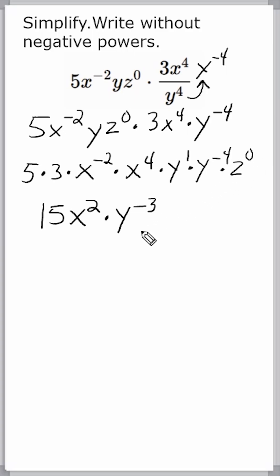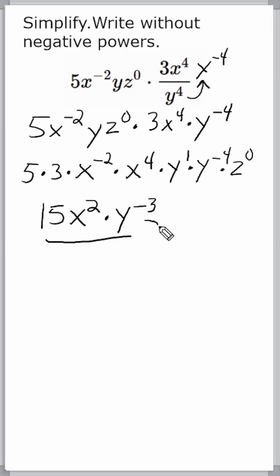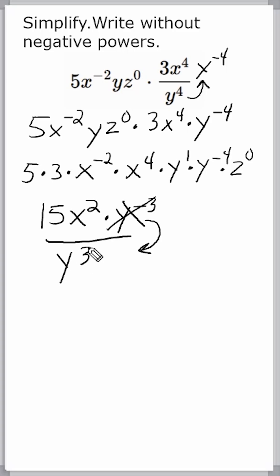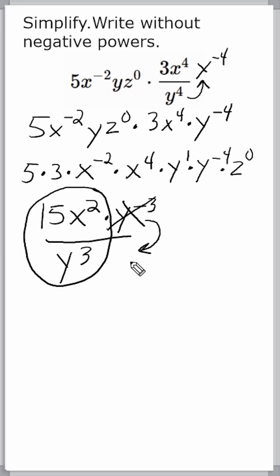Now remember, we have to write this expression with no negative powers. So we take a fraction bar and move the y to the negative third term to the other side. When moving a term to the other side with an exponent, we write the opposite of that exponent. So this becomes y to the positive third. Our final answer is 15x squared divided by y cubed.